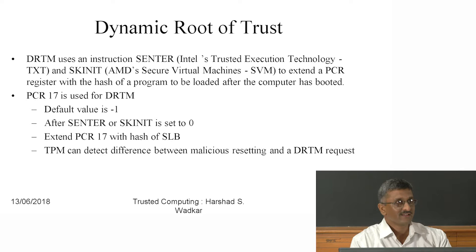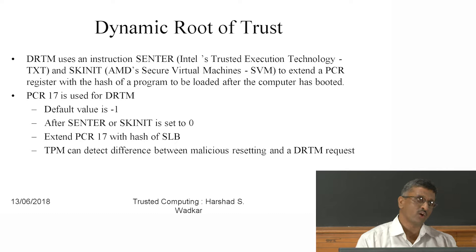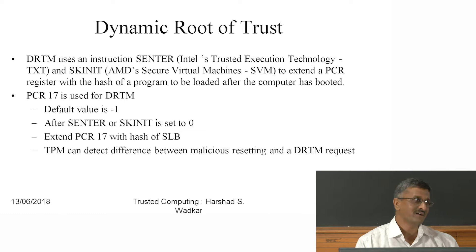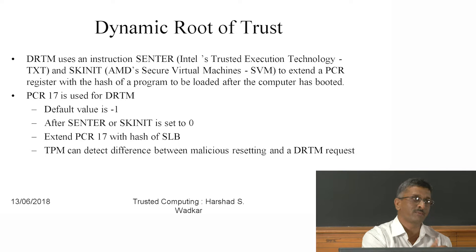Does static root of trust always apply? Not always — if you are in a hurry and want to book a ticket, you may open the browser directly without following the full trust sequence. For such cases, Dynamic Root of Trust (DRTM) is required. The PCR used for DRTM is PCR 17, which is initialized to minus 1 by default.